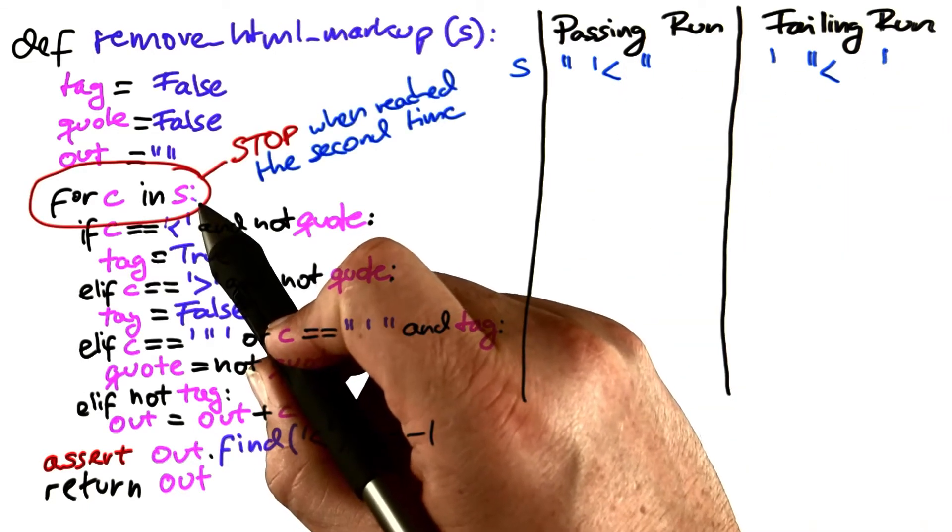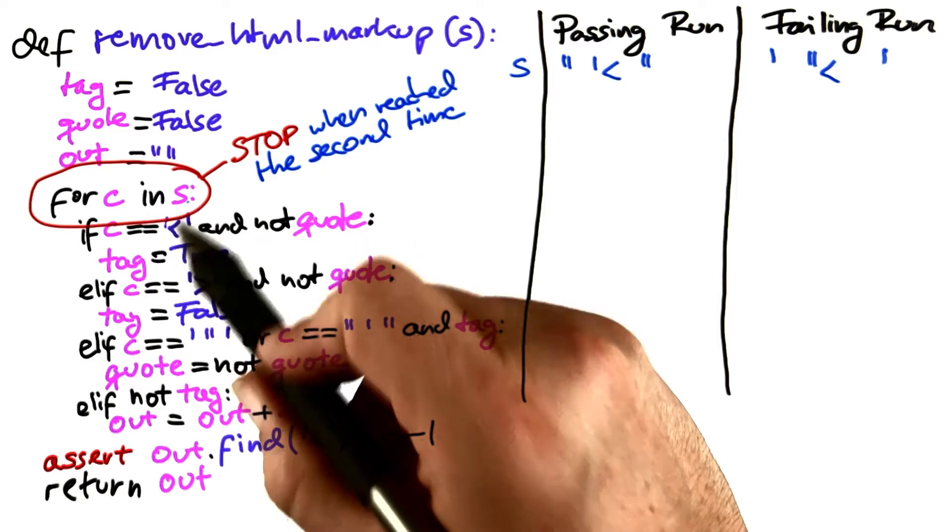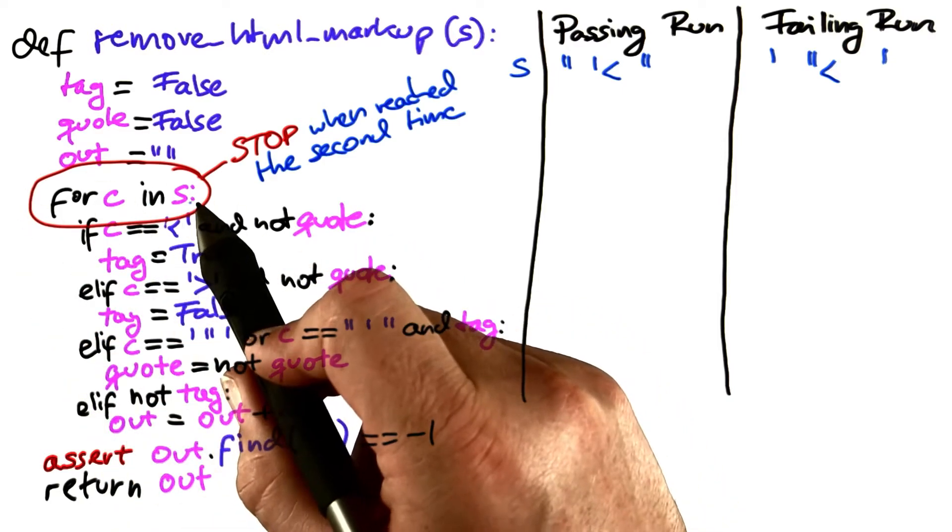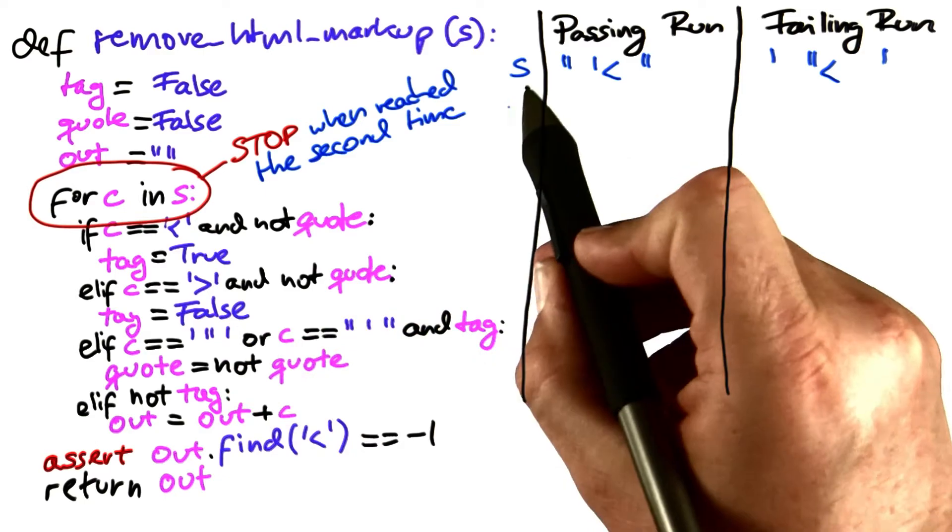Let's go and execute the program a bit further, but stop execution when the loop head is reached for the second time. Now again, we can examine the state.